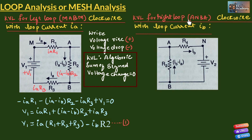Now let us apply KVL for the right loop in clockwise direction with loop current Ib. For resistor R4, the voltage drop will be Ib times R4. Next, we traverse through battery V2 from positive to negative, which is considered a voltage drop, so the voltage drop across V2 is minus V2. Since R2 is shared between two loops, the voltage drop across R2 will be Ib minus Ia times R2.